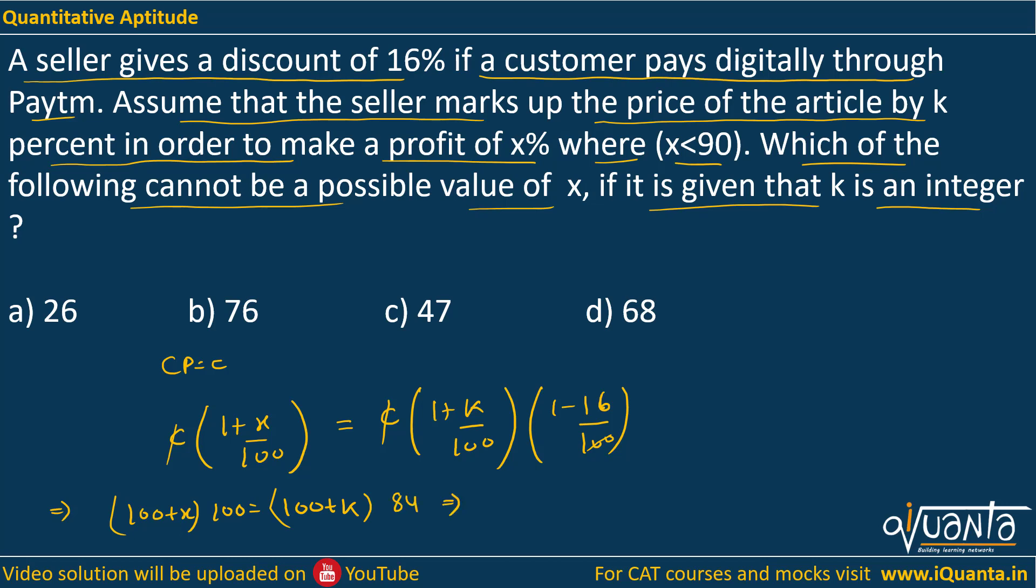Now if we rewrite this then we will be getting 1600 plus 100x equal to 84k. We are interested in possible value of x, so if I write k then it will be equal to, 4 will cancel, so I can take this will be 400, this will become 25, this will become 21.